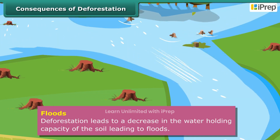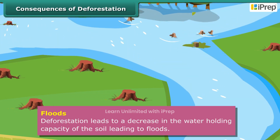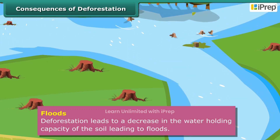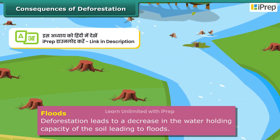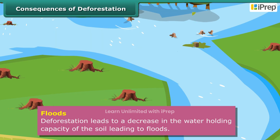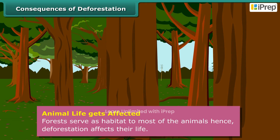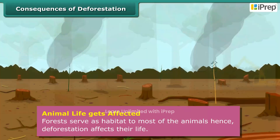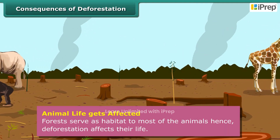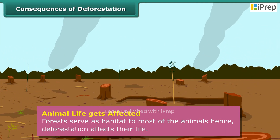Deforestation also leads to a decrease in the water holding capacity of the soil. The movement of water from the soil surface into the ground is reduced, resulting in floods.